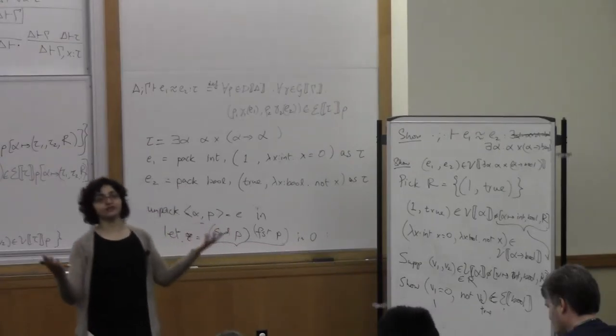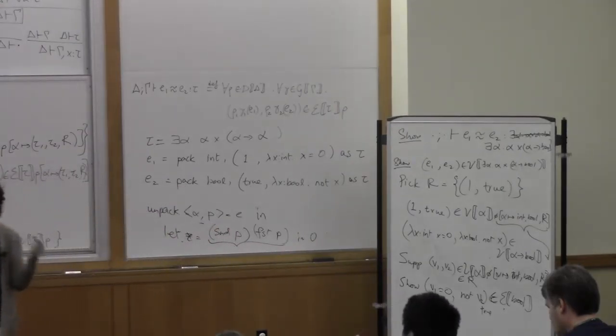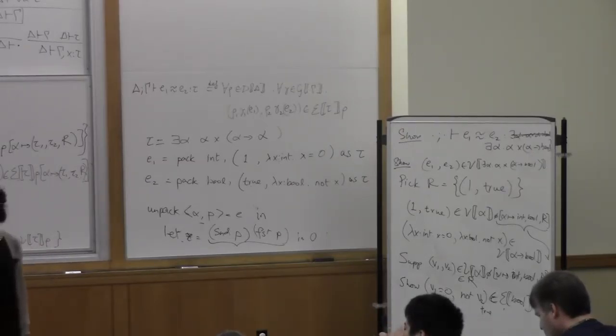What helps us is that, yeah, sure, there are two arbitrary inputs that are related, but they come from the relation R that we got to pick. So we got to sort of cut down our space to just the one and the truth. And then the rest of the proof goes through.